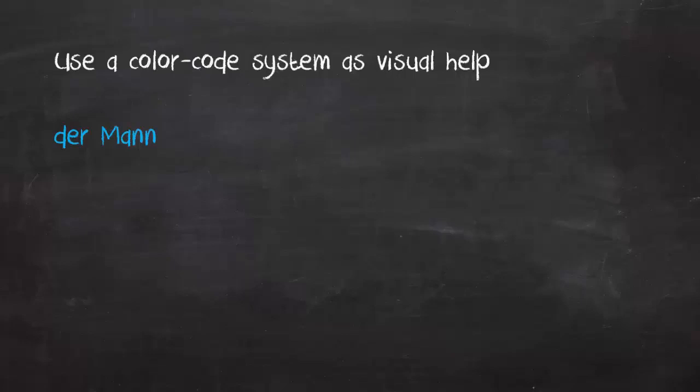When you learn a new word, write it down with a blue pen if it's masculine — like 'der Mann,' the man. Use a red pen for feminine nouns, like 'die Frau,' the woman. And a yellow pen for neuter nouns, like 'das Kind,' the child. This color association helps later on to recall the gender by just trying to remember what color the word was written in.